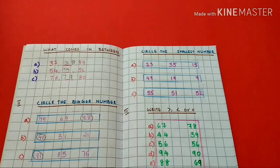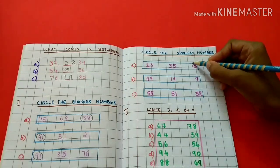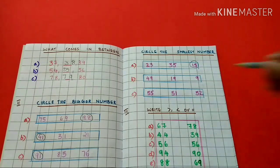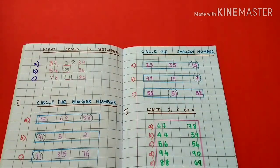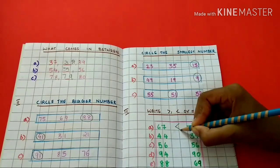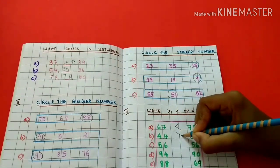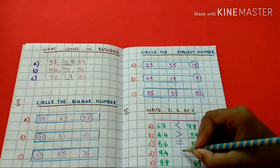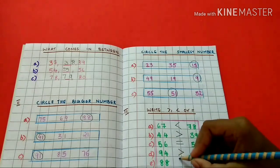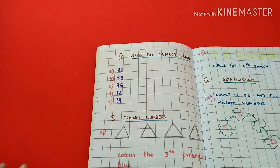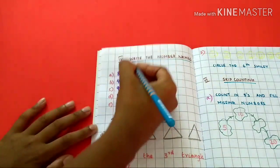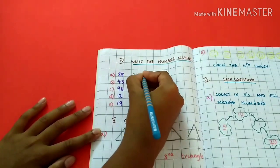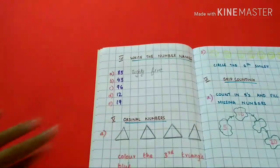Circle the smallest number: 23, 35, 15, 49, 19, 9, 55, 51, 52. Write greater than, less than, or equal to: 67 and 78, 44 and 39, 56 and 56, 94 and 90, 88 and 69. Write the number names: 85. 43.